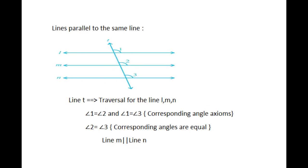Lines parallel to the same line: if two lines are parallel to the same line, then they will be parallel to each other. Let us draw a line as a transversal for lines L, M, and N. Given that line M is parallel to line L and line N is parallel to line L. Therefore, angle 1 equals angle 2 and angle 1 equals angle 3 by the corresponding angles axiom. Similarly, angle 2 equals angle 3. Therefore, line M is parallel to line N.